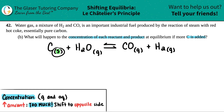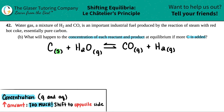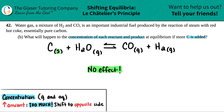It said: what will happen to the concentration of each reactant and product? No effect — nothing will happen. You could say this in general, or go through each one: H2O — no effect; CO — no effect; H2 — no effect. Overall, it would not change the concentrations.